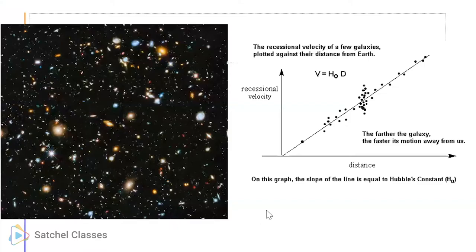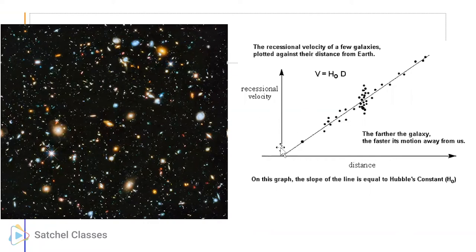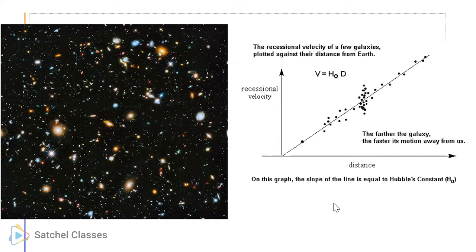A very key point here is the recessional velocity of galaxies plotted against distance - this is Edwin Hubble's work. So the distance away and the speed - we could plot all of the galaxies, using stars to measure the distances, and look at how fast they're moving away by the redshift. The further the galaxy, the faster its motion away from us. This led to the idea that the whole universe is expanding.